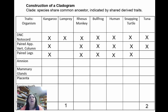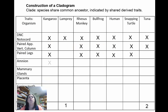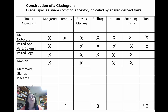Now let's look at the amnion — the ability to lay eggs or have offspring away from water. Kangaroo: yes. Monkeys: yes, they give live birth. Turtles: yes, they lay eggs. But the bullfrog lays eggs near water because the young are tadpoles requiring water. So mark X in every column except the bullfrog; the bullfrog gets a '3' at the bottom. Continue through the remaining traits on your own. As a hint: at the bottom you'll have numbers one through seven with no repeats, meaning one organism will have all seven traits.